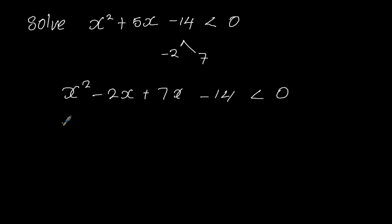So this will be factorized and we end up with x into x minus 2 for the first two terms, then plus 7 into x minus 2 is less than 0. So that will be x minus 2, then x plus 7 is less than 0.